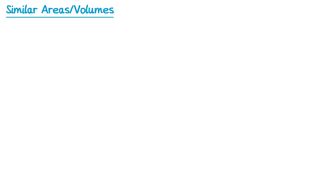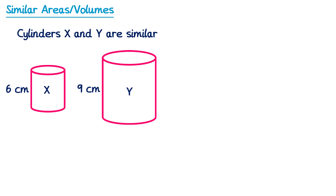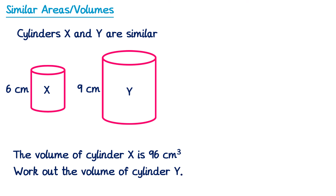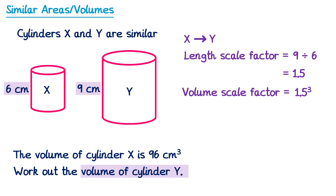The same idea works with volume. We've got similar cylinders X and Y — the volume of cylinder X is 96cm cubed, and we need to find the volume of cylinder Y. We have two corresponding lengths, so the length scale factor going from X to Y is 9 divided by 6, which is 1.5. So the lengths on cylinder Y are 1.5 times as big. Now I want the volume scale factor, which I find by cubing the length scale factor.